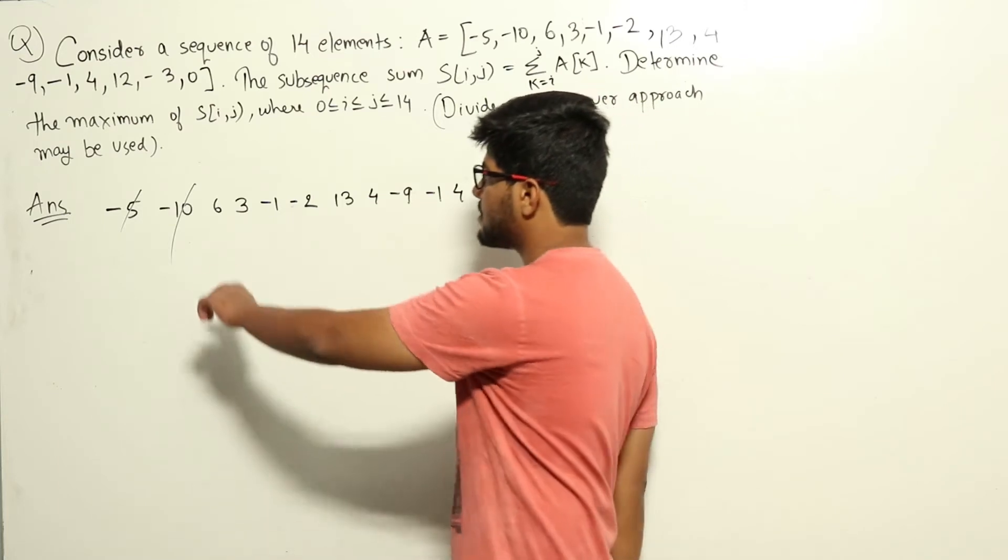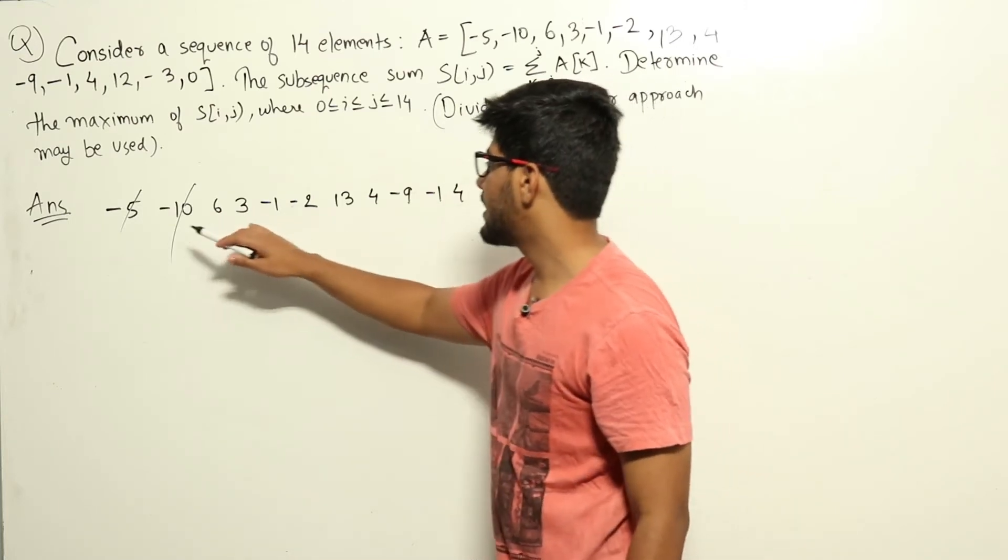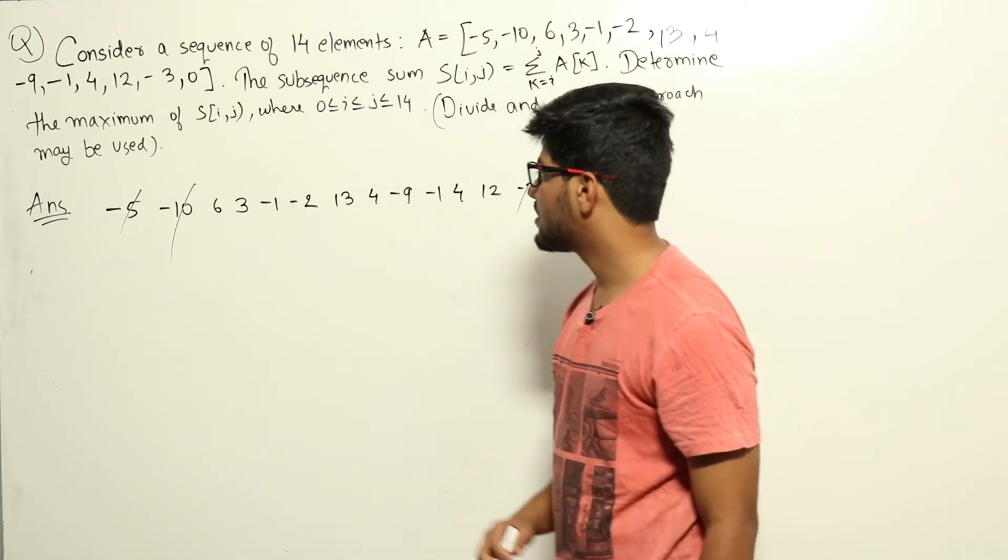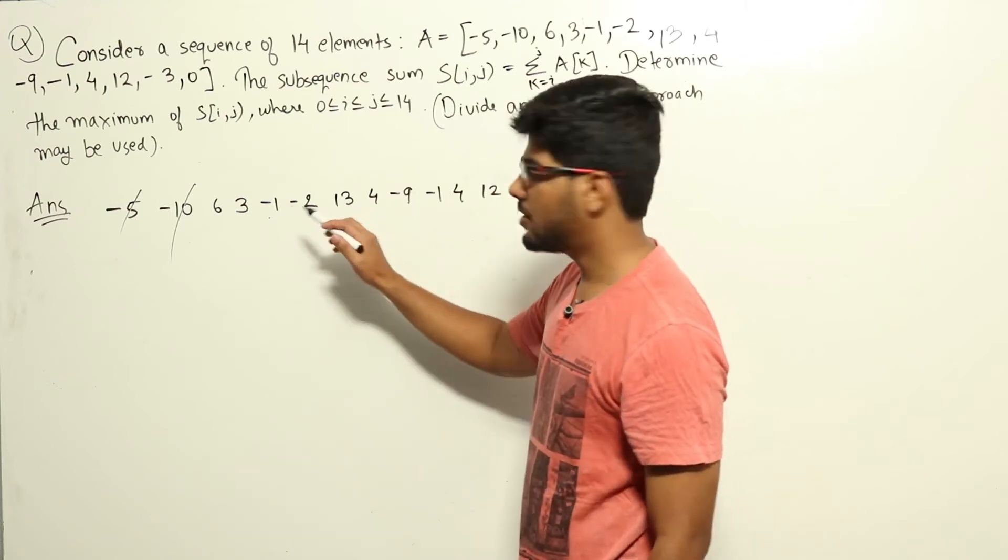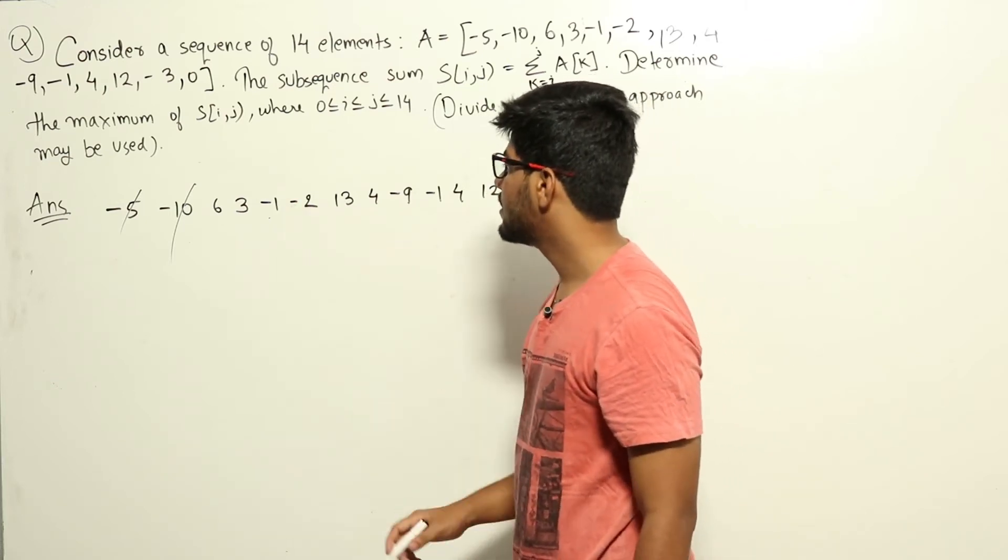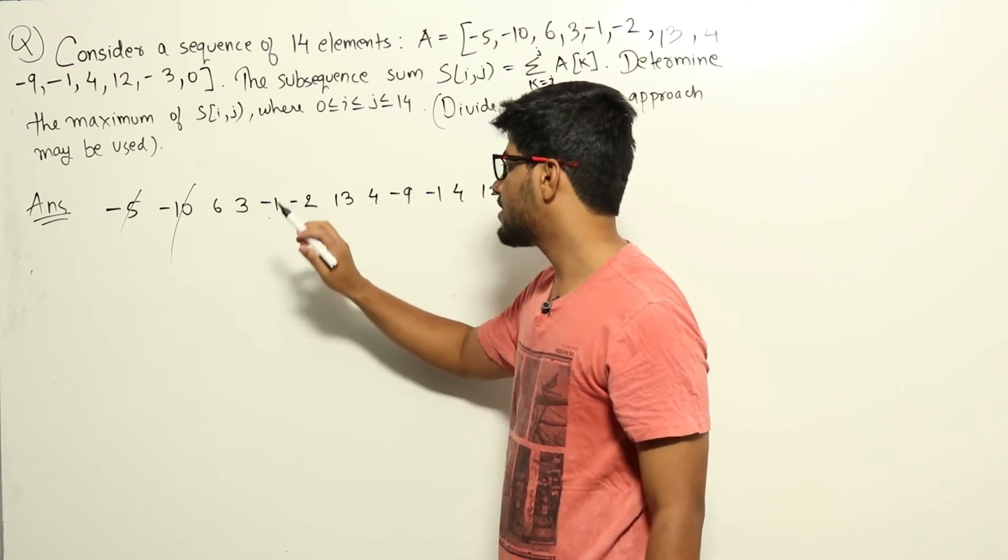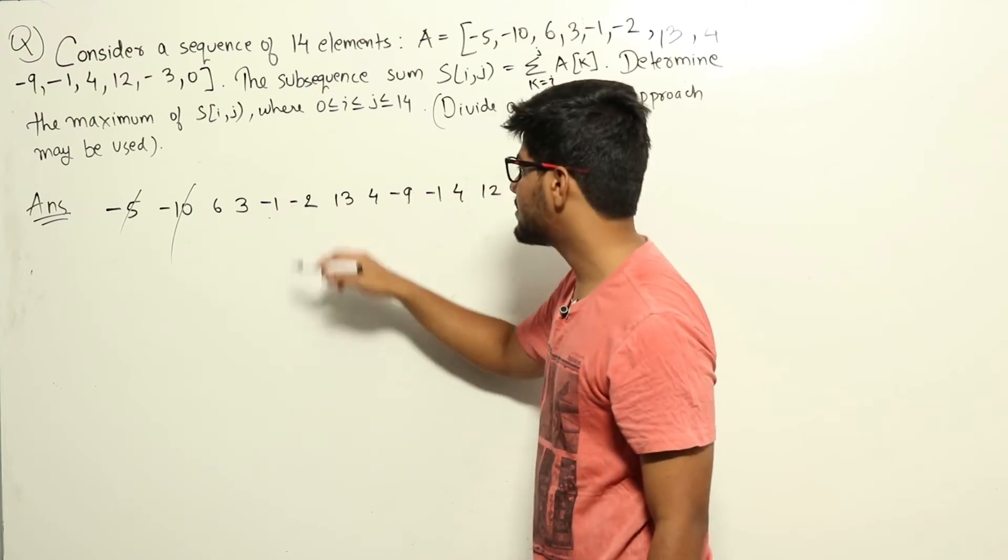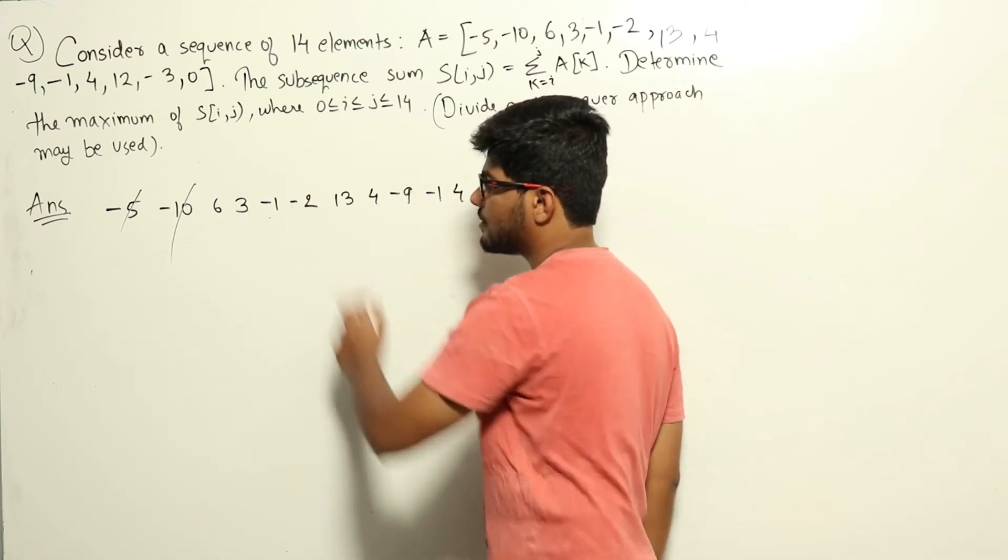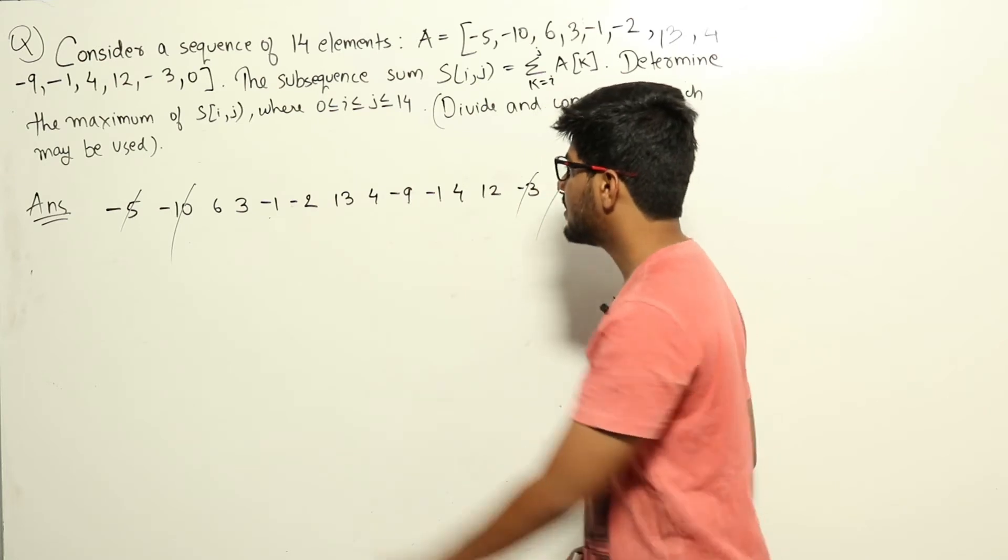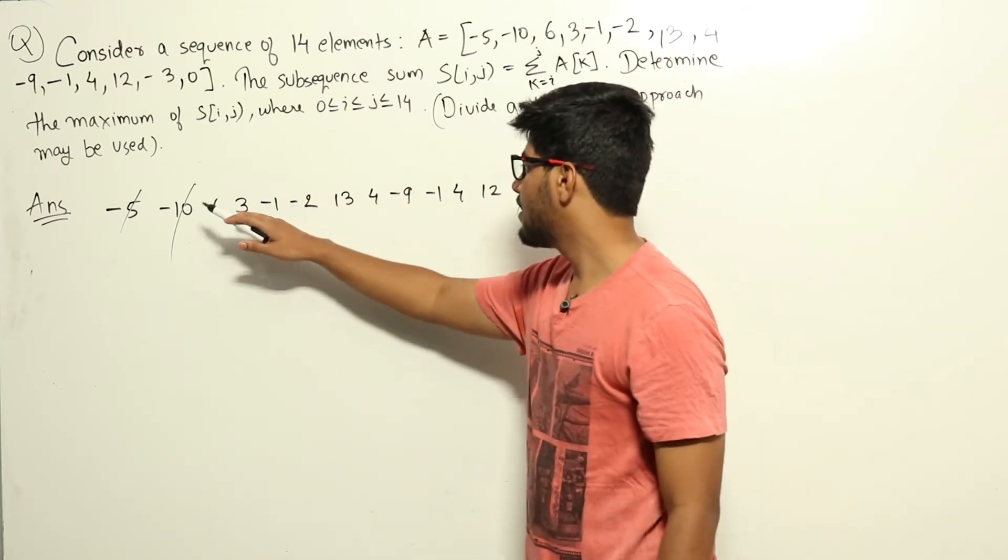Now let us start from whatever is left and see what maximum sum we can take. Let's say I'm taking 6, that is positive, fine. 6 and 3 I take, that is total sum will be 9. Now if I take these two numbers also, then from 9 it will be reducing by -3, so it will reduce from 9 to 6. Now let us find out if taking these two numbers makes any sense. Look at the third number, 13.